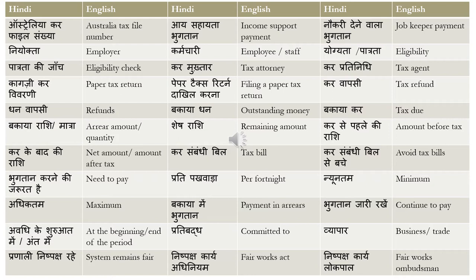'Kar mukhtar' means tax attorney. An attorney is essentially a lawyer — you can also use the word solicitor. In Australia and anywhere in the world, you would have separate tax lawyers or tax attorneys who take care of matters related to your taxation. 'Kar pratinidhi' means tax agent.